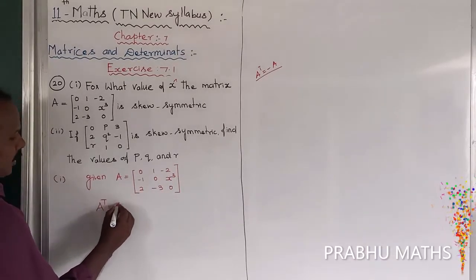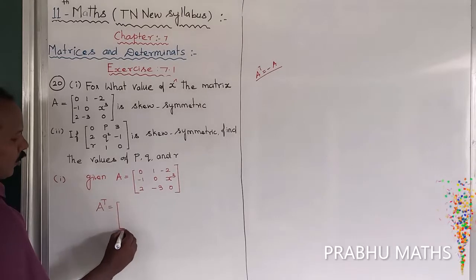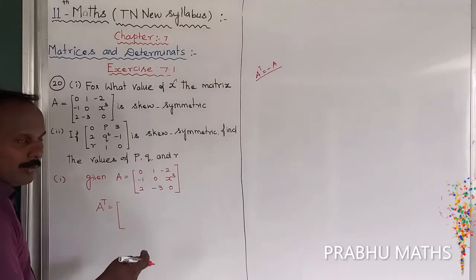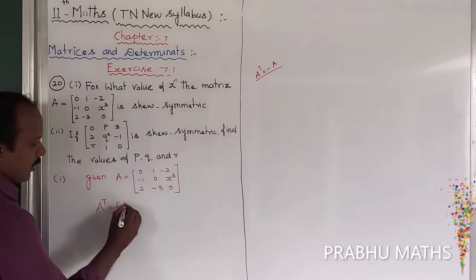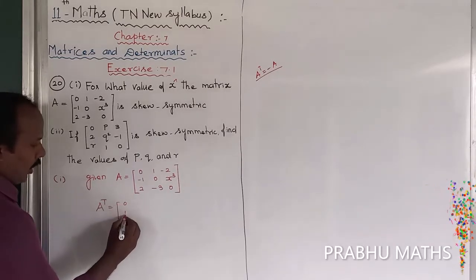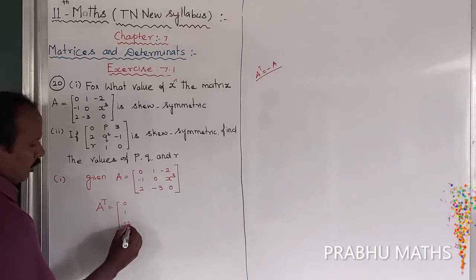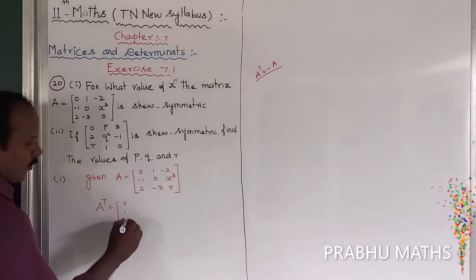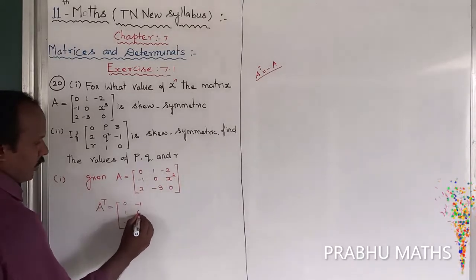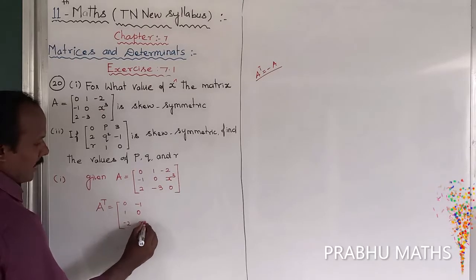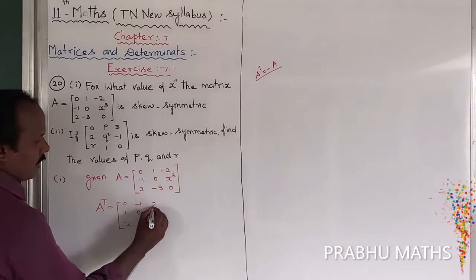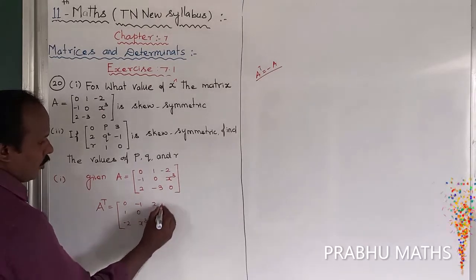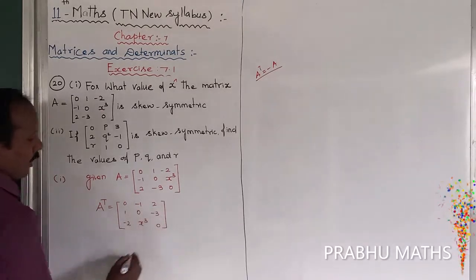Now, A transpose is found by interchanging rows to columns and columns to rows. The first row becomes the first column. So A transpose has entries: 0, minus 1, 2 in the first row; 1, 0, minus 3 in the second row; minus 2, X cubed, 0 in the third row.